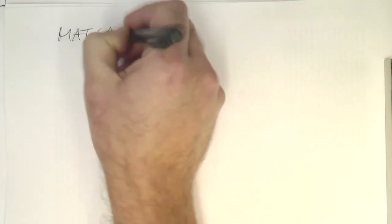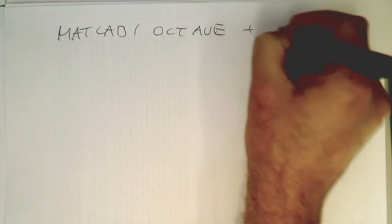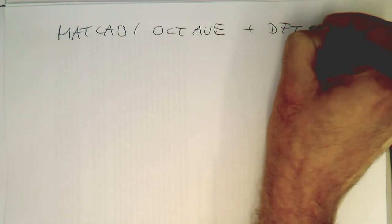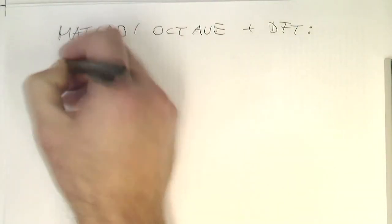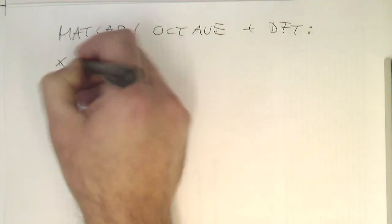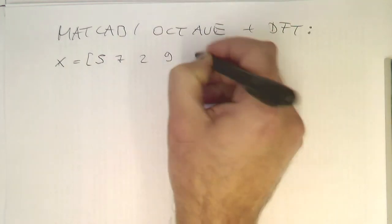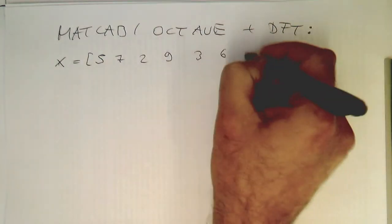Let's have a bit of a play with MATLAB and Octave and the discrete Fourier transform. Let's just play with a really short sequence, so for example something like that, 5, 7, 2, 9, 3, 6.